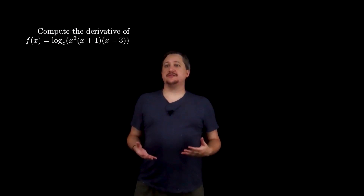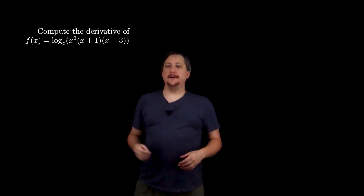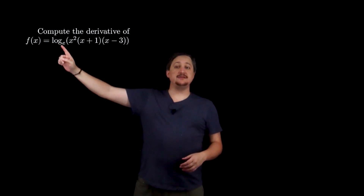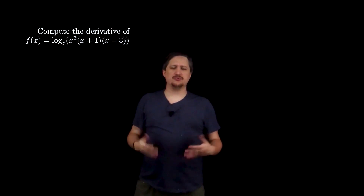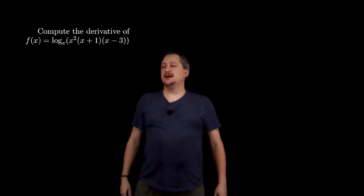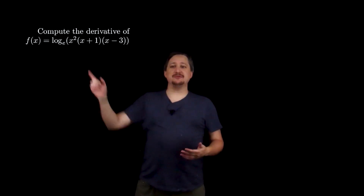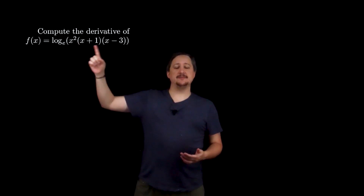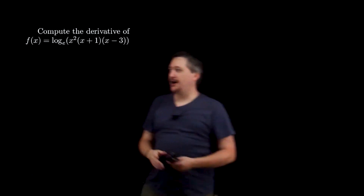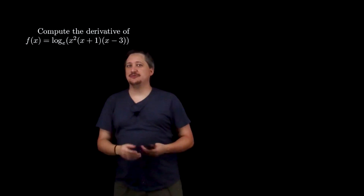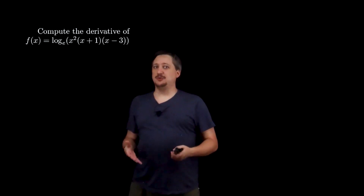In this example we are taking a derivative of a log. This is log base e — so normally we write that as ln, natural log — but I'm writing it out so you can see it. We have a messy inside here, and really there are three ways we could do this: the really nice way, the pretty awful way, and the very awful way. I'm going to do this in two different ways.